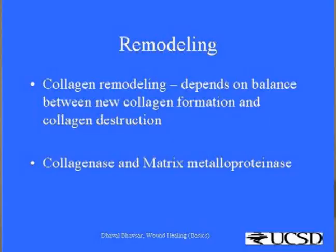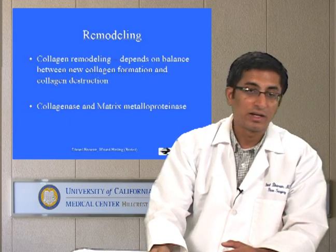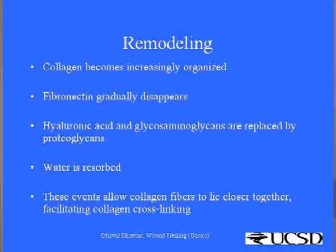Once the wound heals completely, the process of remodeling starts as soon as possible after that. Collagen remodeling is the main event during remodeling. It depends on the balance between new collagen formation and destruction of collagen. Destruction of collagen is aided by collagenase and matrix metalloproteinases — enzymes which are secreted by fibroblasts. The goal of remodeling is to create a balance between collagen formation and collagen destruction so that an adequate amount of collagen is in the wound matrix.